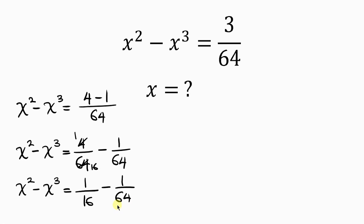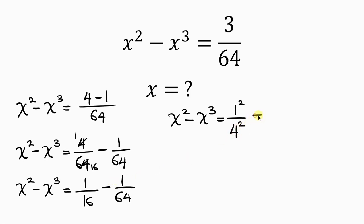Now this can become x squared minus x cubed equal to — 1 is a perfect square so it can be written as 1 squared, all over 16 which is a perfect square. Then minus: 1 is a perfect cube which means it can be written as 1 cubed.